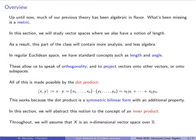Throughout this lecture, we will assume, unless specified otherwise, that X is an n-dimensional vector space over the real numbers. A lot of this is going to hold for other vector spaces, like those over finite fields, but what we don't want are vector spaces over the complex numbers, because properties such as being symmetric and being bilinear will have to be generalized in those settings.